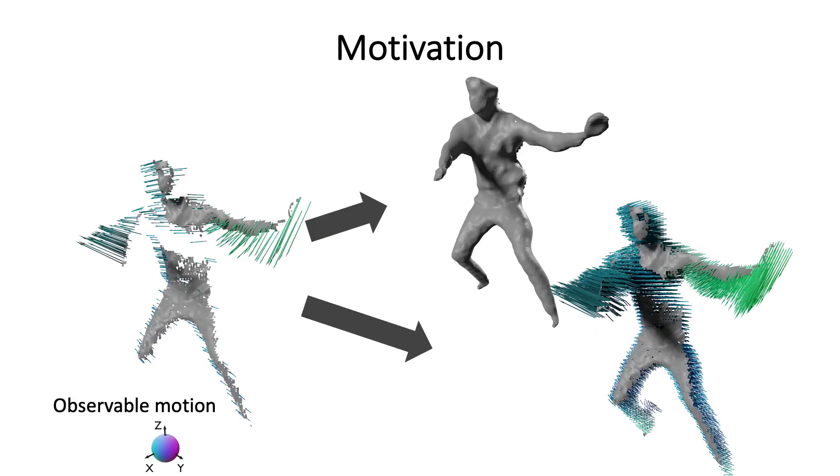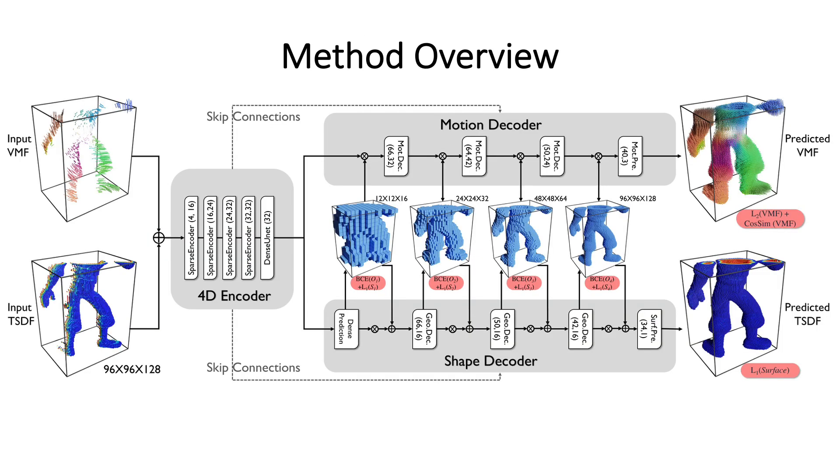How can we estimate the motion of occluded regions? We tackle this problem with a completion approach. Our method takes a partial scan and inter-frame motion as input, and predicts the complete shape and motion field in parallel.